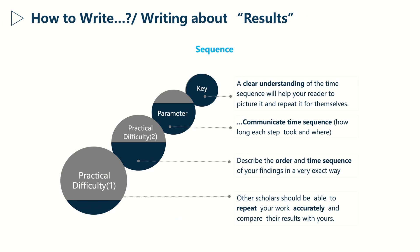So the lack of time sequence while discussing the results generally causes two practical difficulties. The first one is that when reading your paper, other researchers will have a hard time repeating your work with a decent degree of accuracy. The second difficulty is that the lack of sequence will alter the logic flow and render the paper difficult to follow.